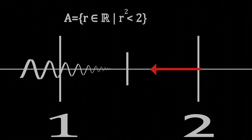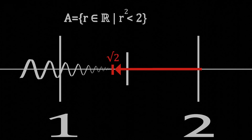With the axiom of completeness, we always have a least upper bound, and therefore we can now fill the gaps we had in the rationals. The real numbers are complete.